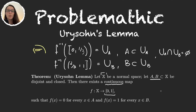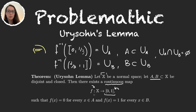Urysohn's theorem is actually the complicated part, which is where we have to find this continuous mapping. The proof is a bit long so this video will be separated into two parts. The objective now will be to find a way of using the density of the rational numbers in [0,1] to find a dense collection of sets in X. Let's get started with the proof.